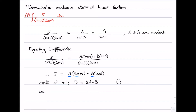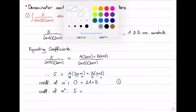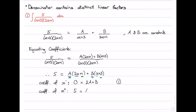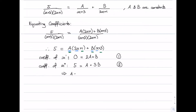Next we look at the coefficient of x to the power 0, which is really the constant term. On the left hand side the constant term is 5. On the right hand side, the constant term comes from a times 1 and b times 3, giving us a plus 3b equals 5. That is equation 2. Solving these two simultaneously gives us a equals negative 1 and b equals 2.